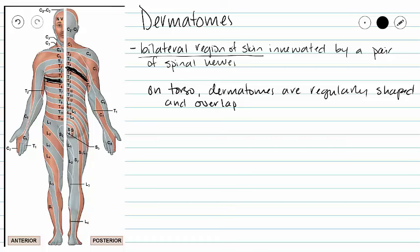On the torso, dermatomes have very regular shapes. They cover particular pieces of skin on the torso, and these areas overlap.